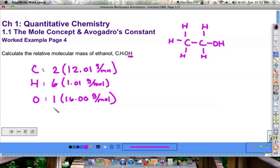Now each of these numbers are counting numbers, so they don't matter when we're dealing with significant figures. Only the values from the periodic table do. So we can multiply this out. Two times 12.01 would be 24.02 grams per mole.